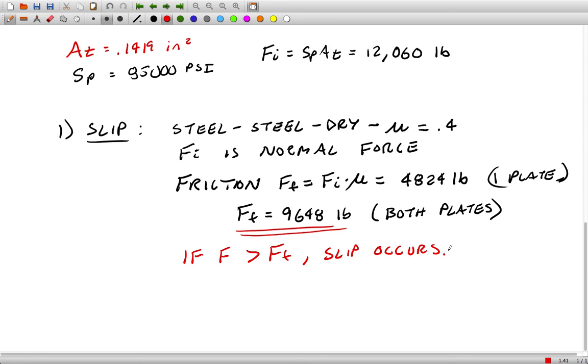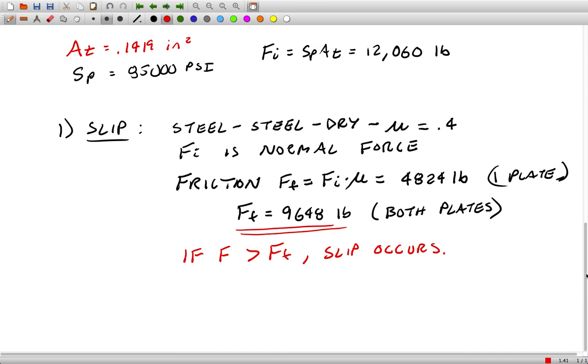It just means that the friction can no longer handle the external force, which means the bolt is now handling the external force. And when that becomes the case, we need to figure out how much force the bolt itself can handle before it shears off. So that'll be the second part here.